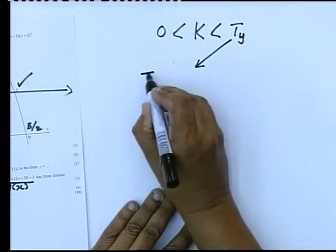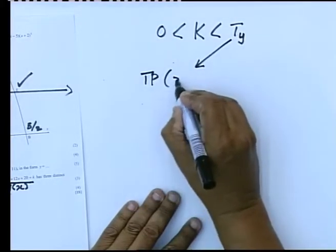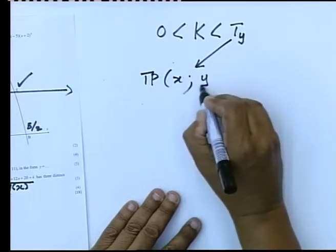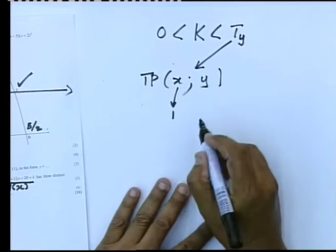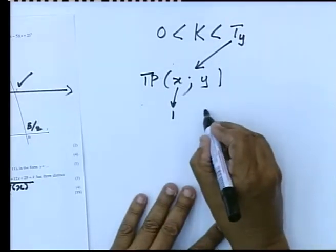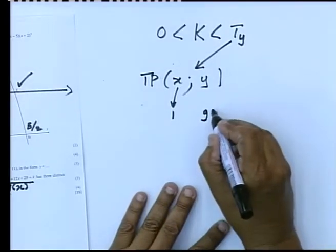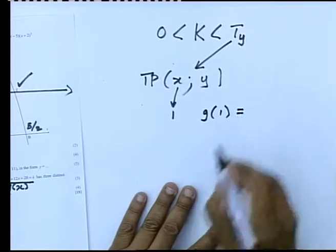That y value at point T was the turning point of which the x value was 1. We had that earlier, and if you can plug that into g of x, which you had at the beginning, to find the y value, you will notice that g of 1...